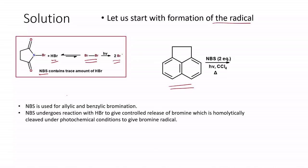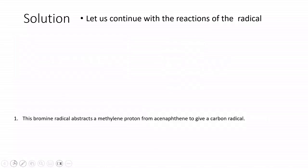This bromine molecule under photochemical conditions undergoes radical homolysis, generating a bromine radical. This bromine radical will now react with the acenaphthylene. There are various places the reaction can happen — one may be in the cyclopentane ring system, another in the aromatic ring system. NBS is mainly used for allylic and benzylic bromination, so we can expect halogenation to take place at the benzylic position.